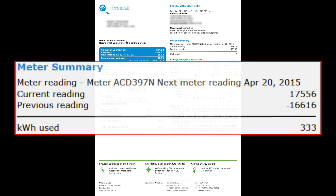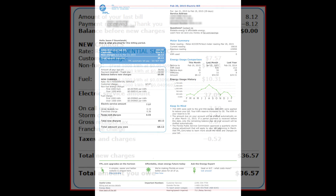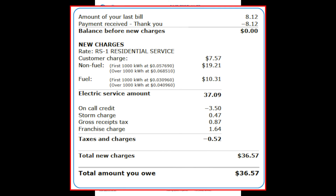If we look at my next bill for the following month, you'll see that my meter summary again does not add up — 17,556 minus 16,616 does not equal 333. In the new charges section, I was in fact charged for some electricity this month: 333 kilowatt hours of energy used in excess of what I produced. The electric service amount includes a customer charge, a non-fuel charge, and a fuel charge, for a total of $36.57.